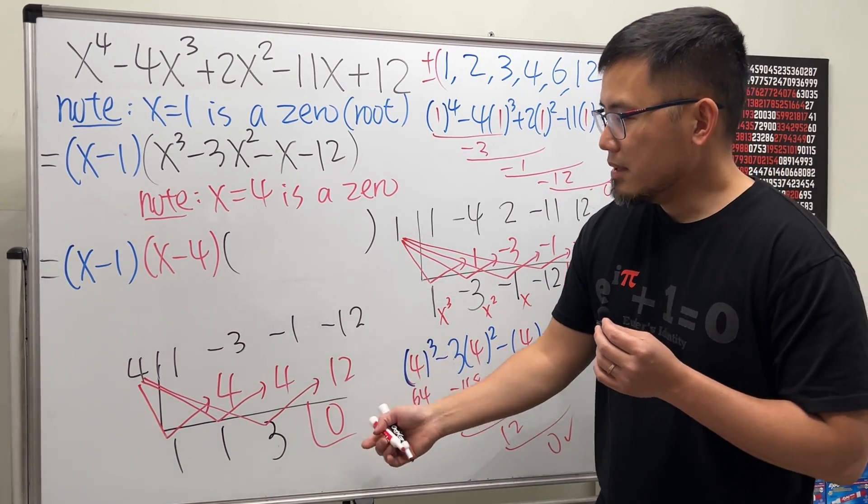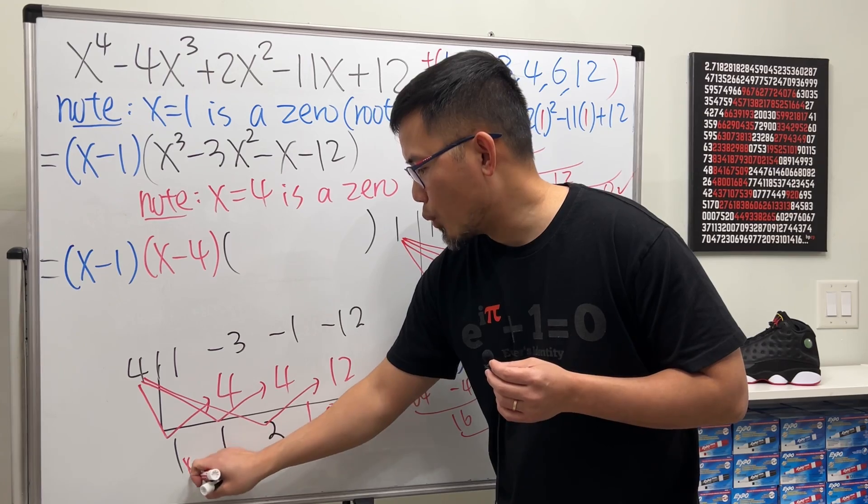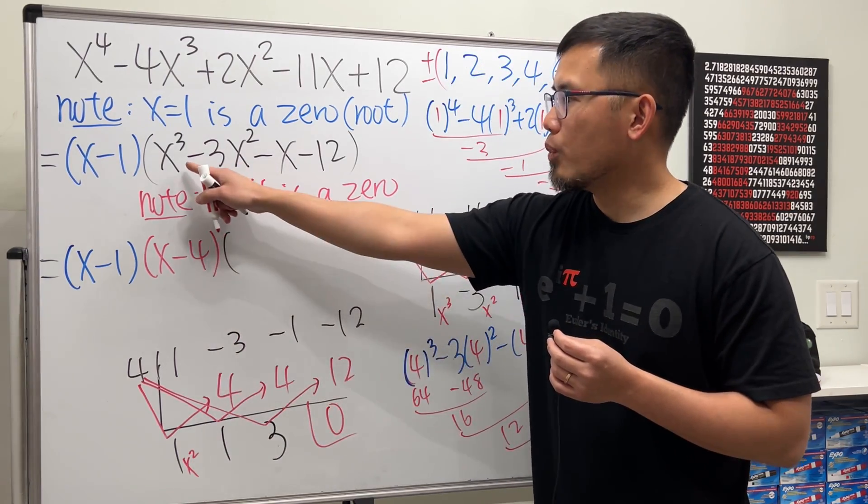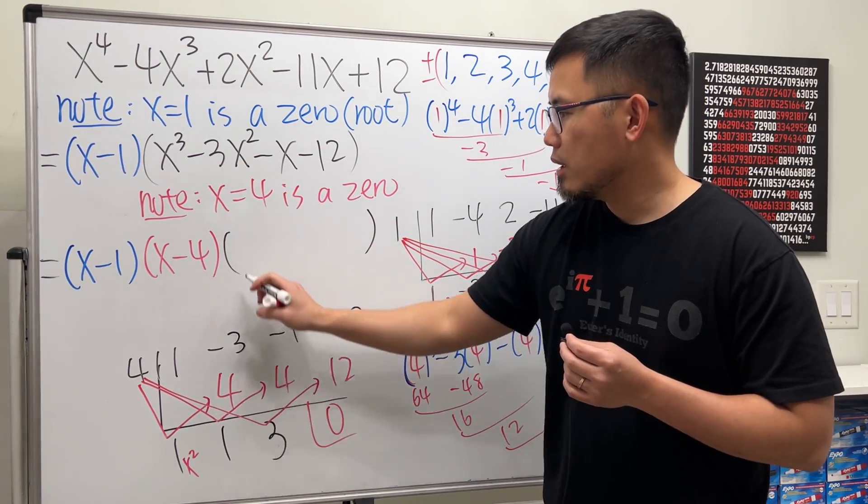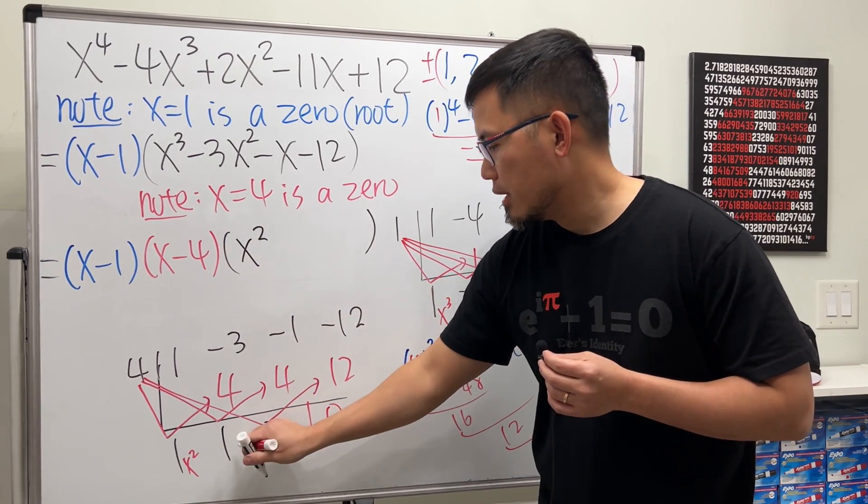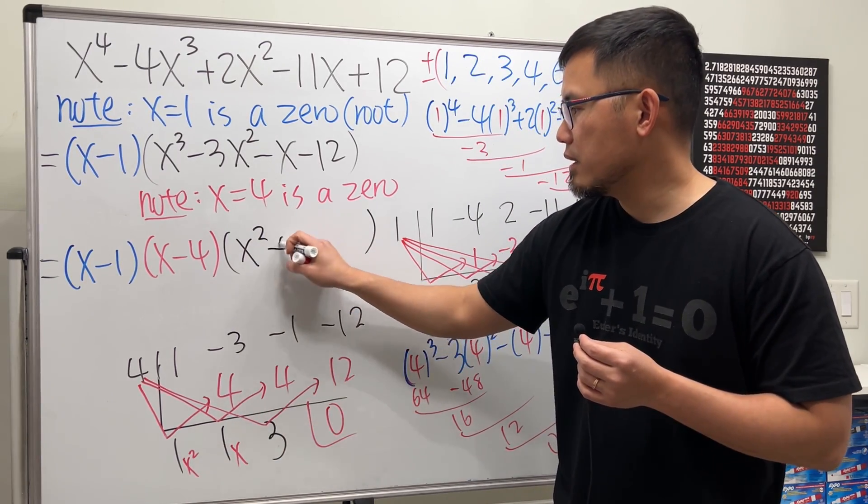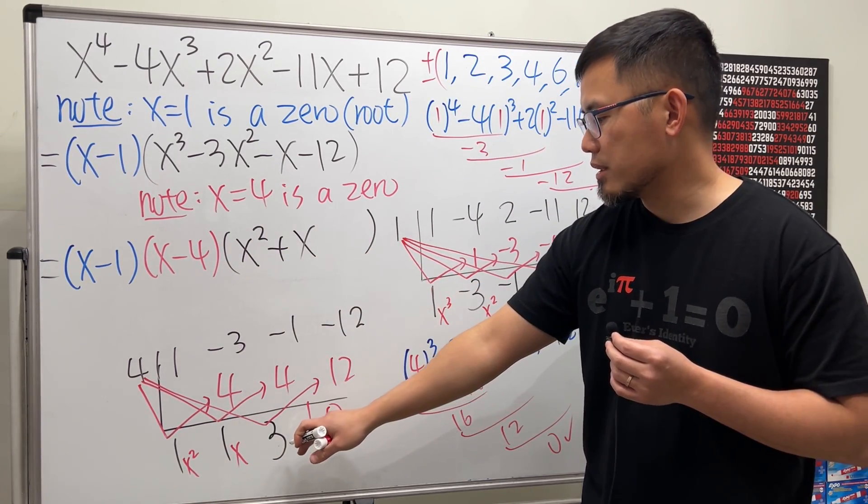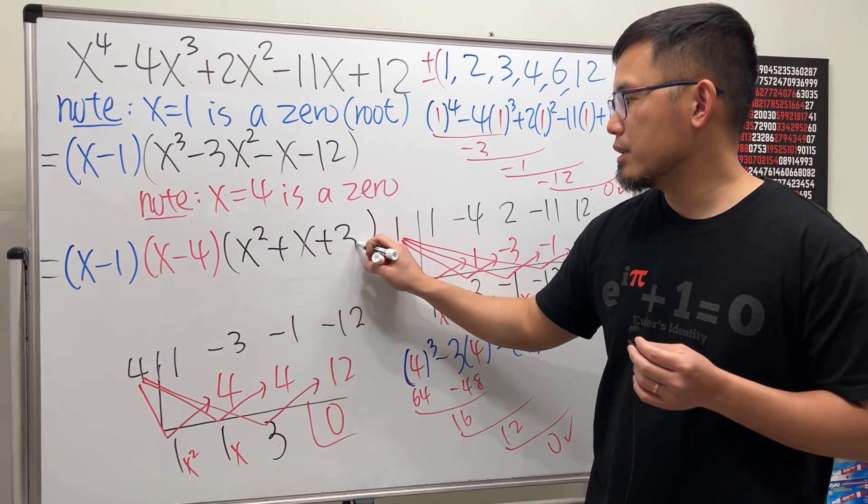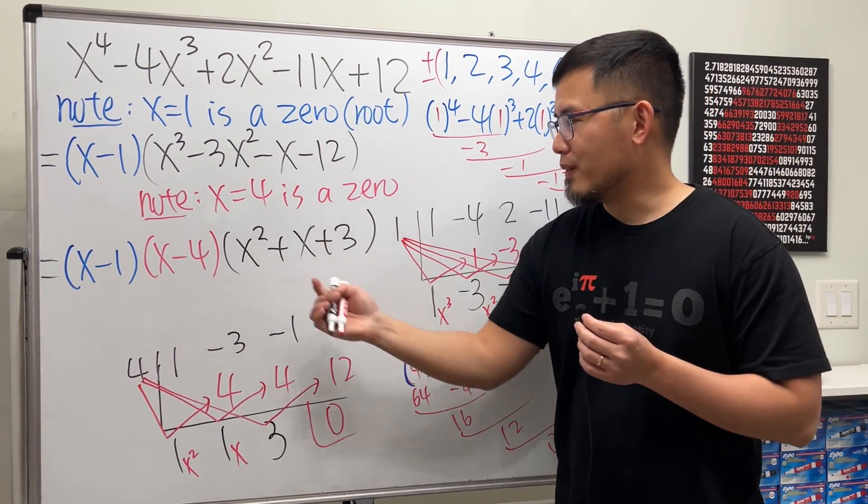So that means this factor is 1x squared because the power goes down by 1, so 1x squared, and the next one is positive x, and the last one is 3, just like that. Now finally, this is just x squared plus x plus 3, right? A regular quadratic trinomial. Can we factor this with real numbers? No, I don't think so.